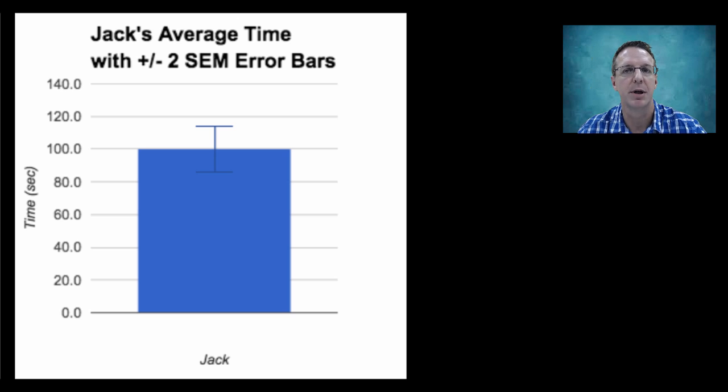Remember that SEM is simply the standard deviation of the averages of repeated experiments and measures how precise the mean of the sample is compared to the true mean. Because we're dealing with standard deviation again, we can apply that same 95% rule to the SEM. So, in this case,